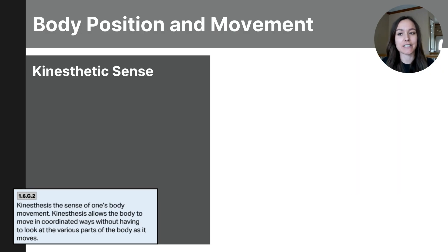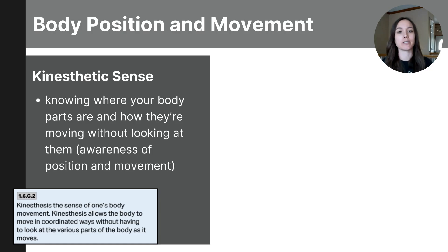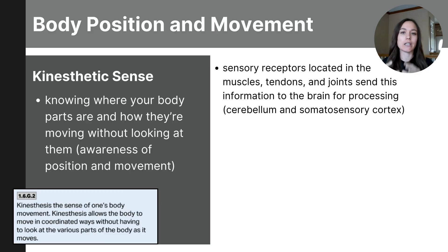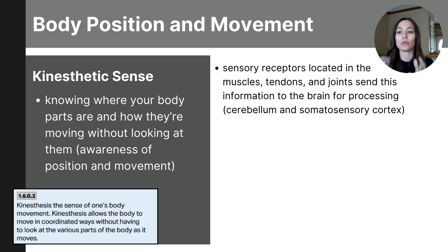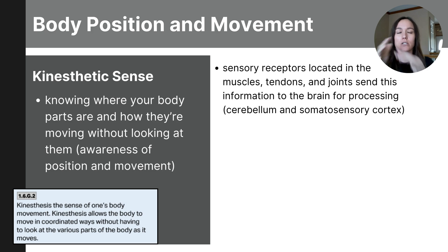Finally, the kinesthetic sense refers to our awareness of the position and movement of our body. Because of your kinesthetic sense, you can move your body in space without having to look at your body parts. This sensation is detected by proprioceptors, located in your muscles, tendons, and joints. They provide information about muscle tension, joint position, and body movement. Signals from the proprioceptors travel through sensory nerves, through the spinal column, and to the brain. They are processed in the cerebellum, which coordinates movement and balance, and in the somatosensory cortex, which integrates sensory information to form a complete picture of where the body is positioned in space.